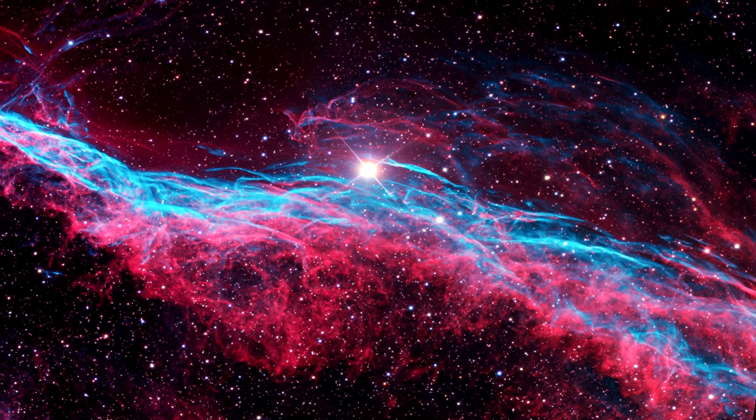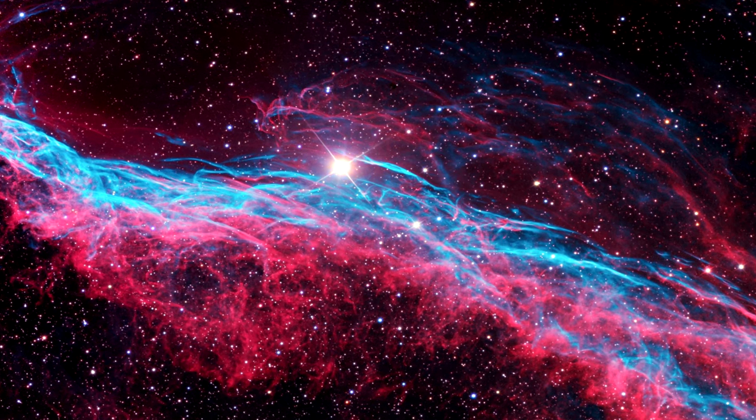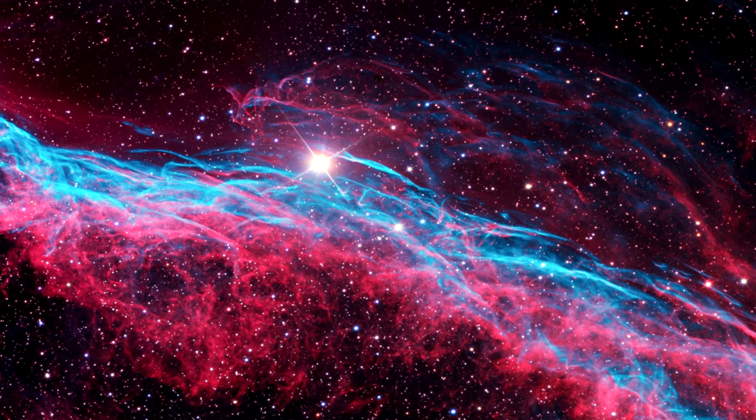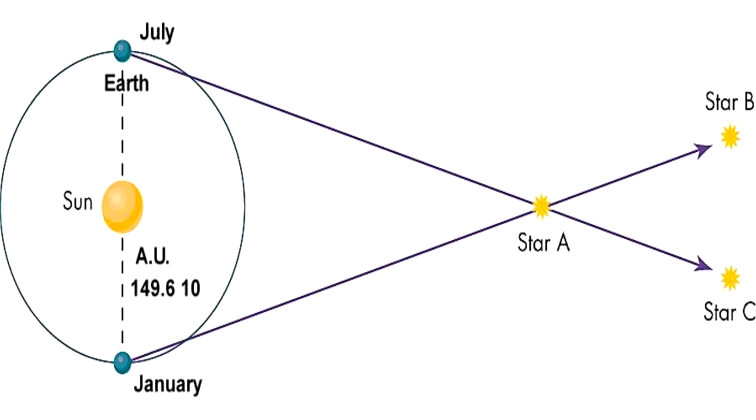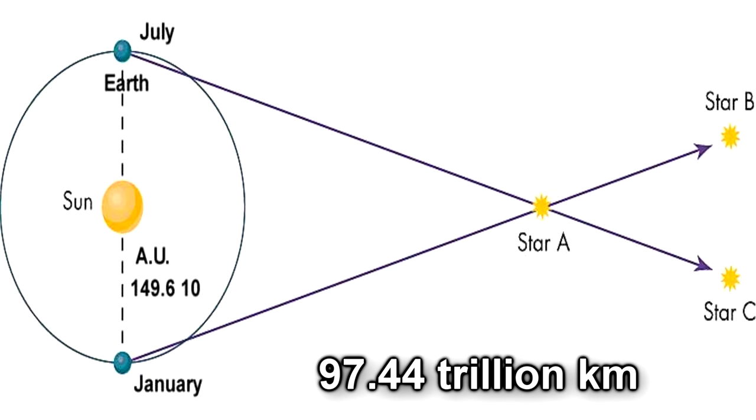In 1830 Friedrich Bessel won the race announcing that 61 Cygni had a parallax of 0.314 arc seconds, which given the diameter of earth's orbit indicated that the star is 97.44 trillion kilometers away. It was a few trillion kilometers off but still.